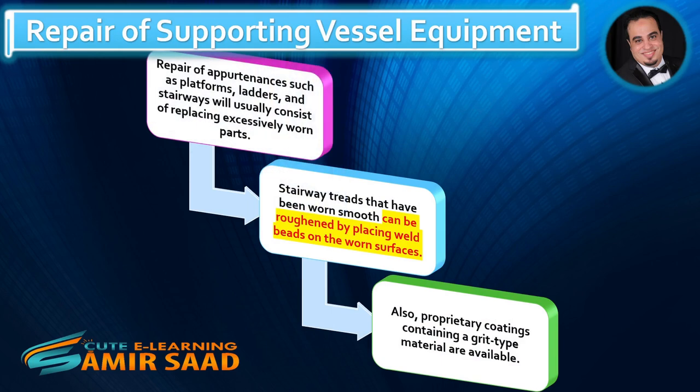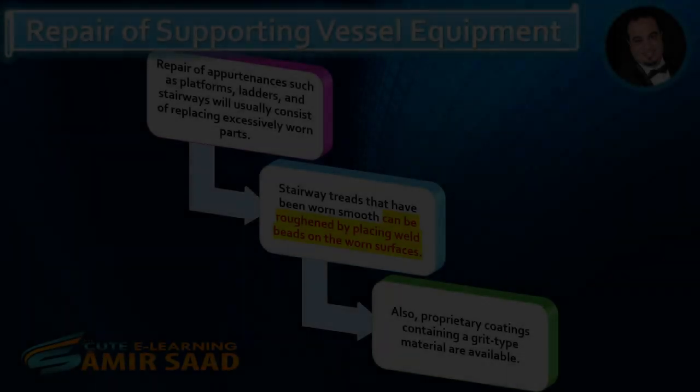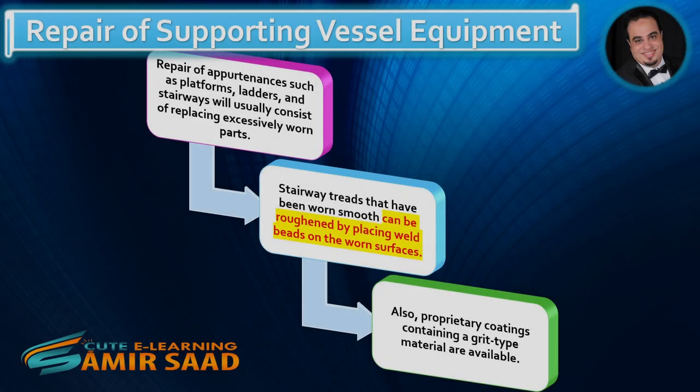Repair of Supporting Vessel Equipment: Repair of appurtenances such as platforms, ladders, and stairways will usually consist of replacing excessively worn parts. Stairway treads that have been worn smooth can be roughened by placing weld beads on the worn surfaces. Also, proprietary coatings containing a grit-type material are available.